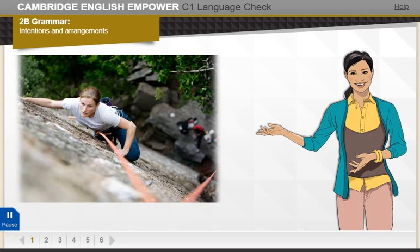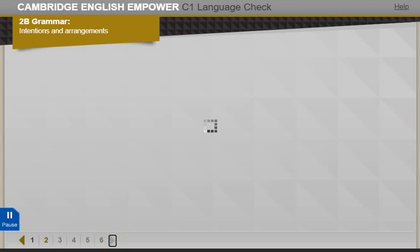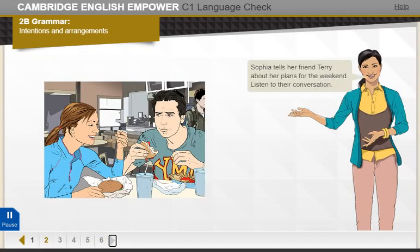You learned different ways to talk about intentions and arrangements in this unit. Let's have another look at this language. Sophia tells her friend Terry about her plans for the weekend. Listen to their conversation.